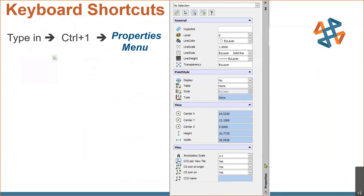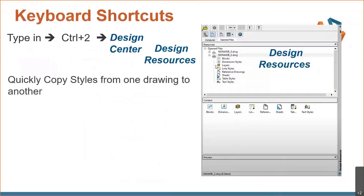Another shortcut people ask about: hit Control+1 and you get your property dimension panel to show up at any time. Hit Control+1 again and it goes away on whichever side you have it pinned to. And the other common one is the design center — in DraftSite we call that Design Resources. This is where we can quickly copy styles from one drawing to another.